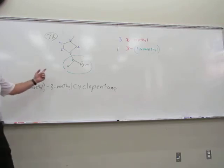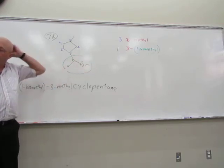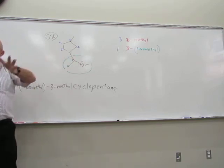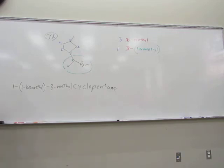So the full name is: 3-(1-bromoethyl)-1-methylcyclopentane. Although we hadn't seen something like this before, if you apply the same rules as with other branched substituents you can figure it out.